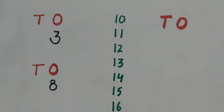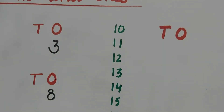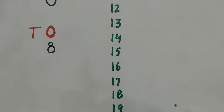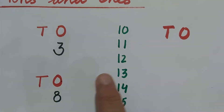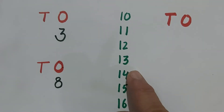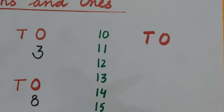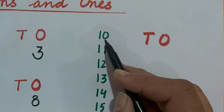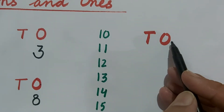Now, 10 to 20 are double digit numbers. See — 10, 11, 12, 13, 14, 15, 16, 17, 18, 19, 20 — they are double digit numbers. How will we write these double digit numbers under tens and ones?